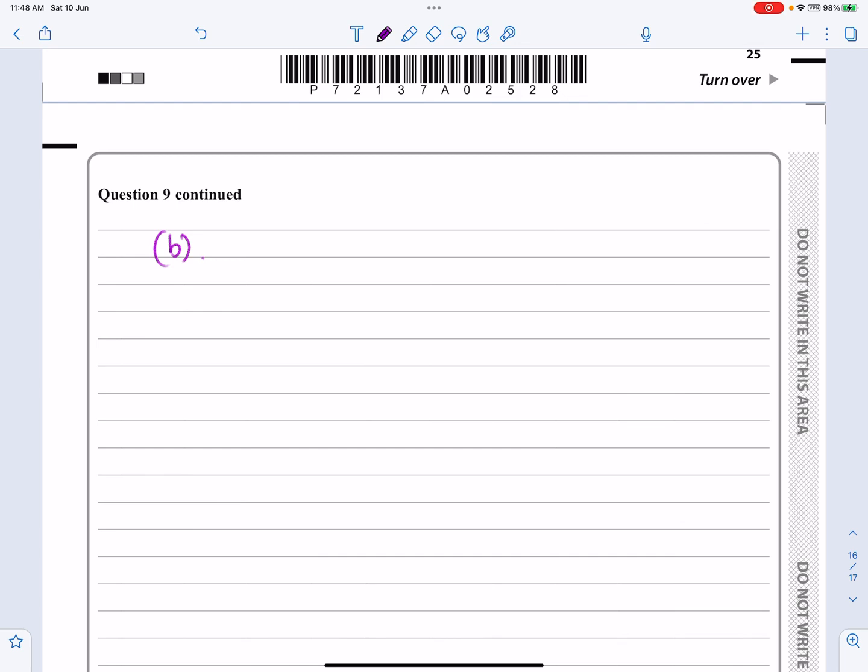We can actually just use the completed square bit to do it. If y equals a half (x minus 10) squared minus 28, then we know the minimum for this will occur when x equals 10. If x equals 10, all of that bit works out to be equal to 0. So that will give us our minimum value. So when x equals 10, and as we've just seen from that, y is equal to minus 28. So that doesn't take me any extra work to do.